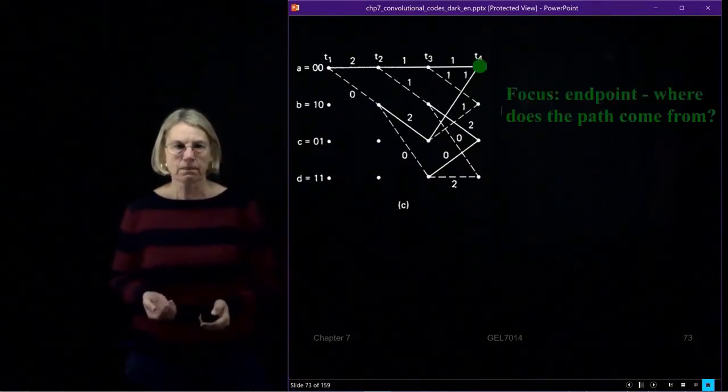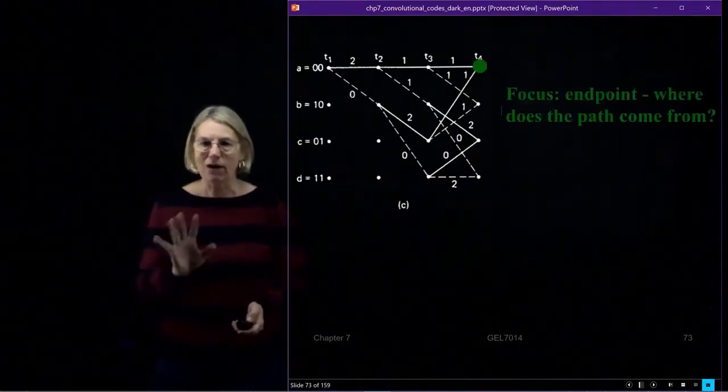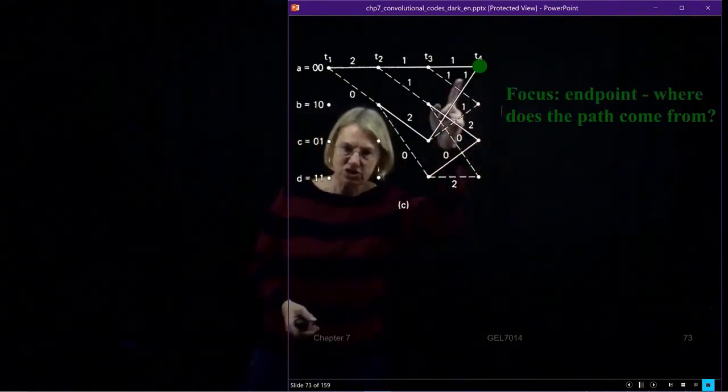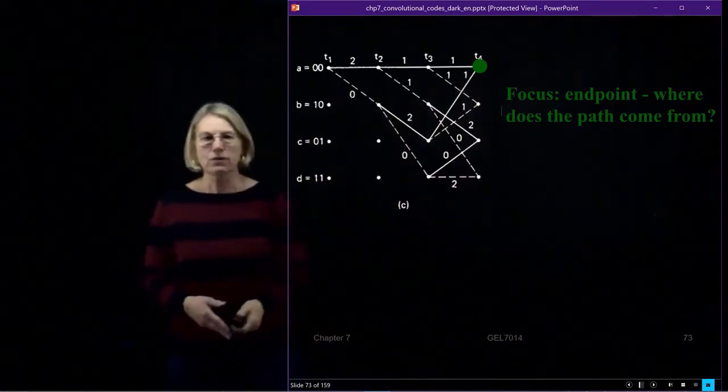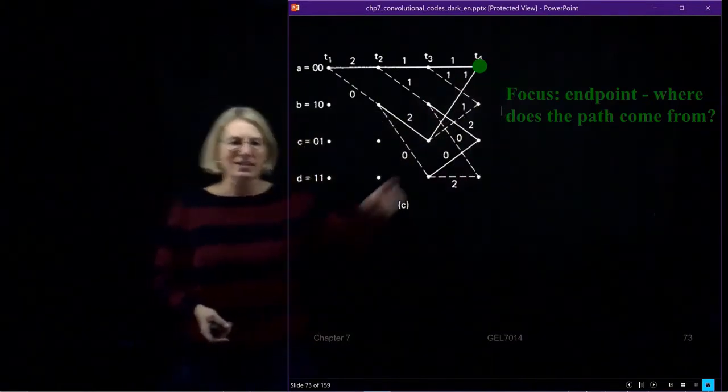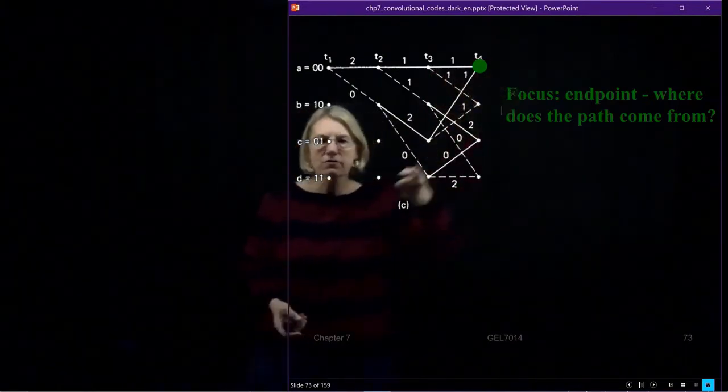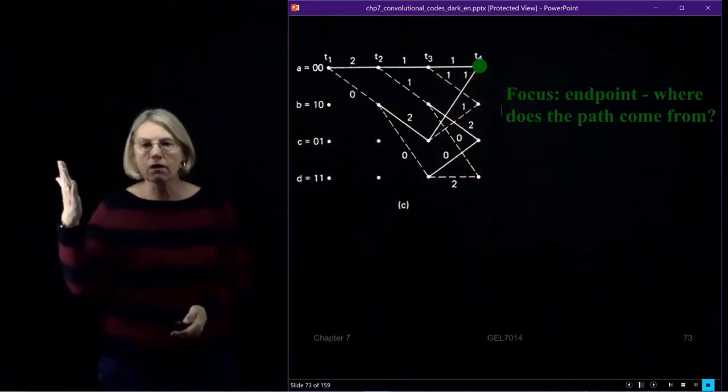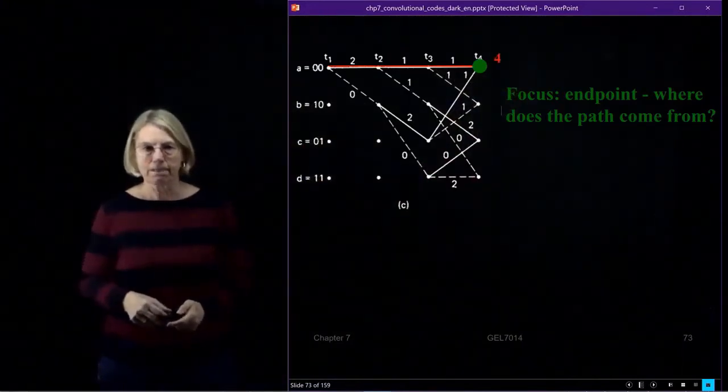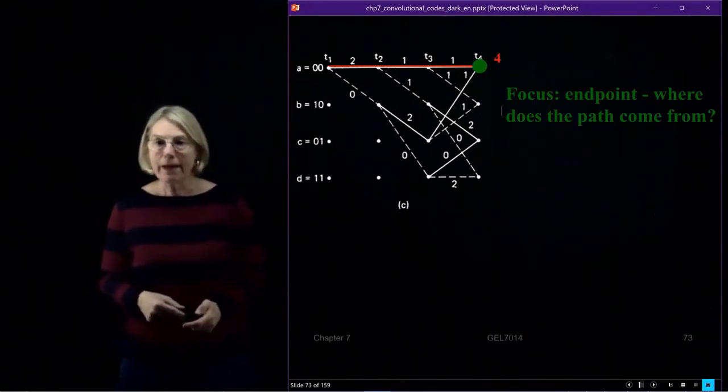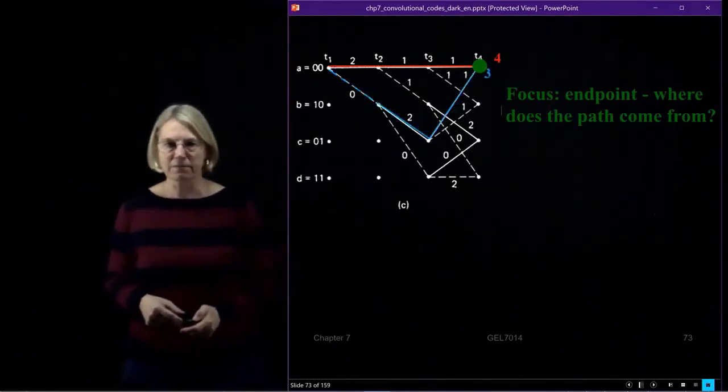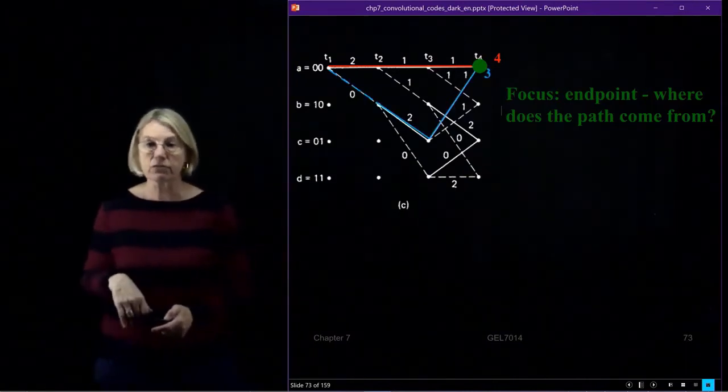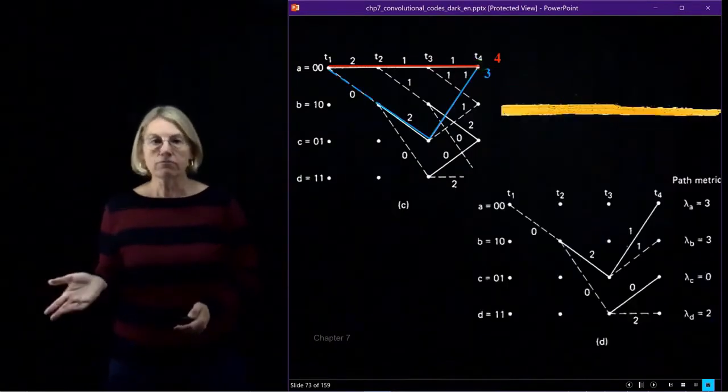So I go through, and I focus now on one endpoint. Sure, I've got four states I have to address, but let's just look at the first one. Where does this come from? Is it the one that came from above or the one that came from below that got me to this path, if at time 4 I really am at state A? So along the upper path I calculate a path metric of 4, and along the lower path I have a path metric of 3. I compare 4 and 3.